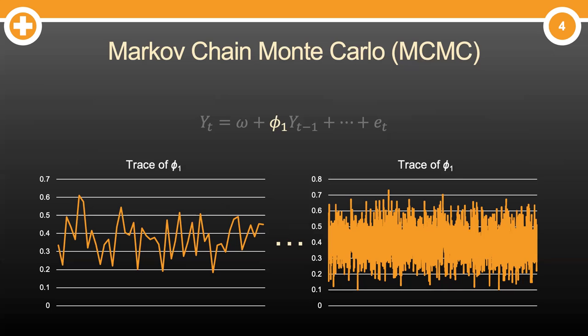The chart you see on the right is an example of an MCMC process used to estimate the value of phi from our regression equation. The chart on the left is the first 50 simulations of that same process, so we can zoom in and see that chain a little bit closer. Got it?